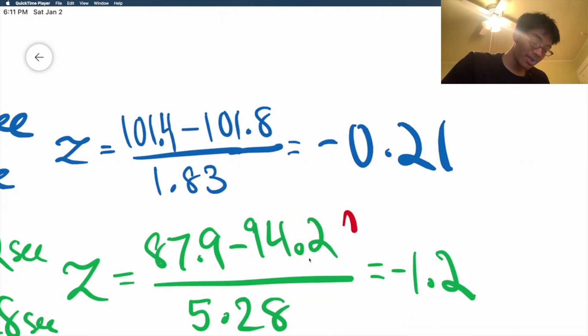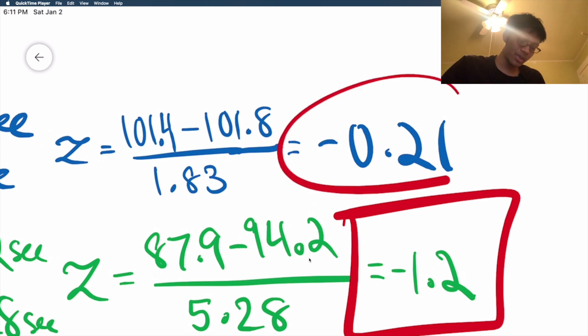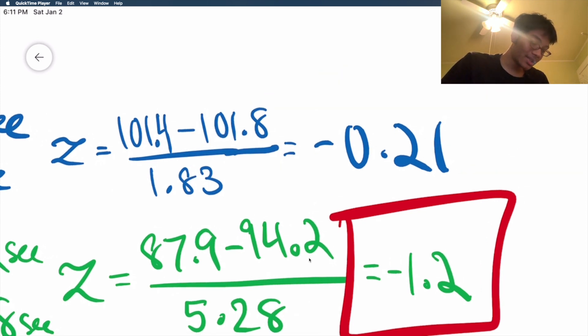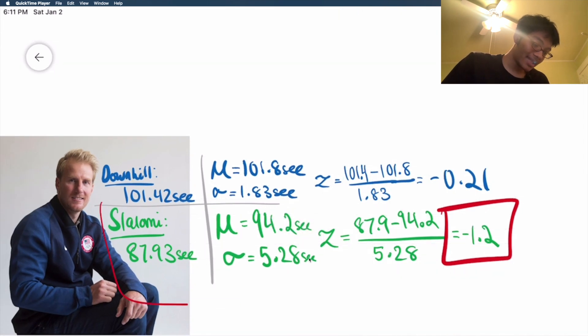Minus 1.2 means you're farther away from the mean. It means you're 1.2 standard deviations away from the mean, as opposed to minus 0.21 standard deviations away. So clearly, Ted is much better in Slalomi than he is in downhill. And that, ladies and gentlemen, is how you compare data.